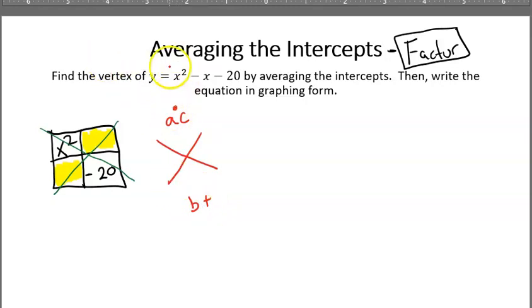So the product of A and C. A is 1, C is negative 20. So I want a product of negative 20, but I want a sum of negative 1. So the two numbers that do that would be negative 5 and 4.